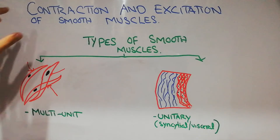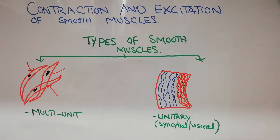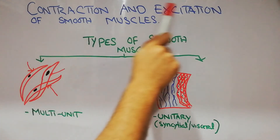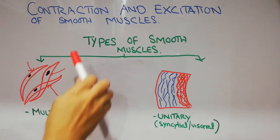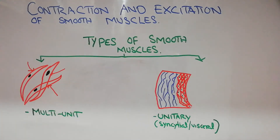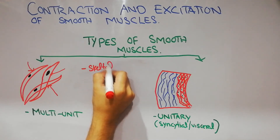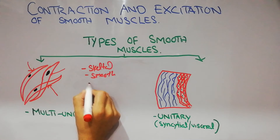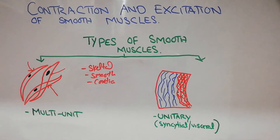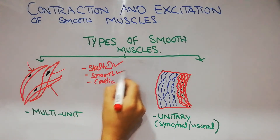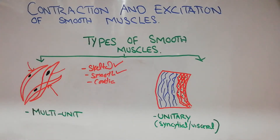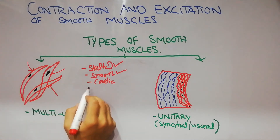Today we are going to start a series of lectures about smooth muscles. We will discuss the contraction and excitation process of smooth muscles. In this lecture specifically, we are going to discuss the types of smooth muscles. We have already discussed that there are three main types of muscles in the body: skeletal muscles, smooth muscles, and cardiac muscles. Now we are going to discuss smooth muscles, and after that we will discuss cardiac muscles.